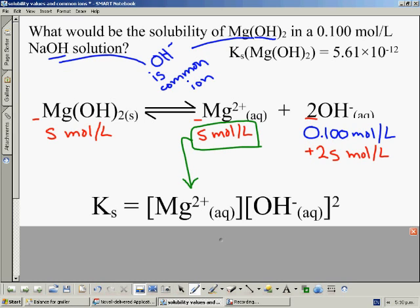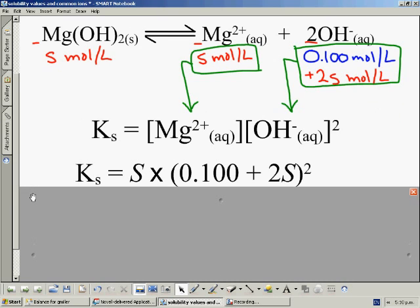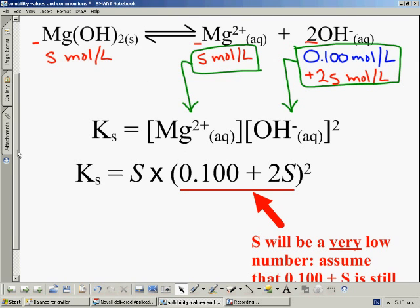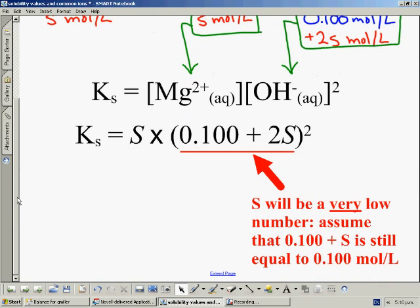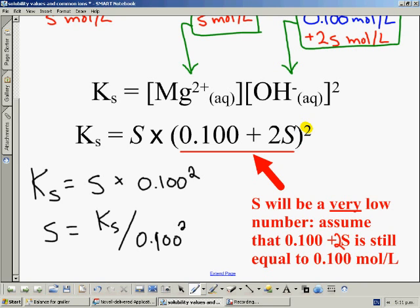So we can put these two things into the square brackets of the Ks expression. And just like before, we end up getting a somewhat complicated looking equation. However, we can make a quick assumption that makes it much, much easier. S is once again a low number, so that 0.1 plus 2S is still more or less equal to 0.1. If we rewrite the expression with this assumption included, we get a much simpler equation. Bear in mind that we still have the power involved, so we must keep that. We rearrange to make S the subject.